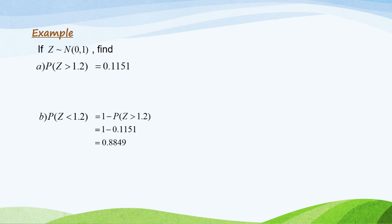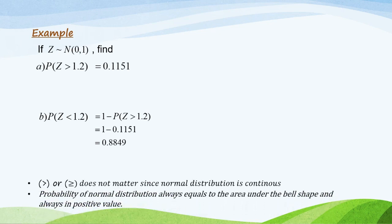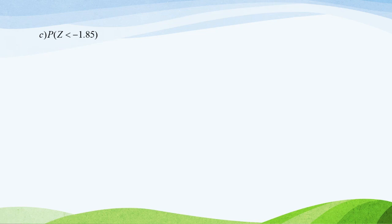Note: when the sign is greater than or greater than and equal to, the symbol does not matter for continuous distributions, since the probability always equals the area under the bell shape and is always a positive value. For part (c), P(Z < −1.85) = P(Z > 1.85) = 0.0322.